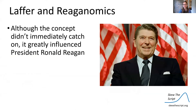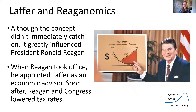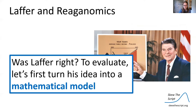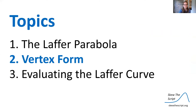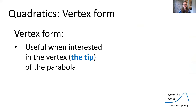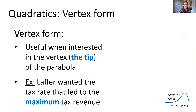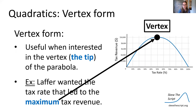Although the concept of the Laffer curve didn't immediately catch on, it greatly influenced President Ronald Reagan. When he took office, he appointed Laffer as an economic advisor, and soon after, Reagan and Congress lowered tax rates. Was Laffer right? To evaluate, let's first turn his idea into a mathematical model. That leads us to topic two: vertex form. Vertex form is another way of writing quadratic equations, most useful when we're interested in the vertex — the tip of the parabola. We're going to use vertex form when evaluating the Laffer curve because Laffer wanted the tax rate that led to maximum tax revenue — the vertex.